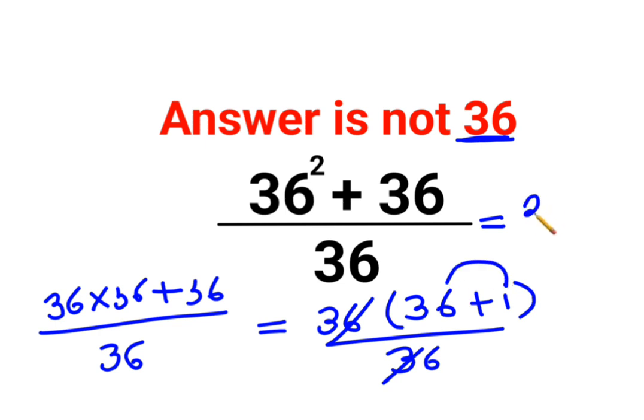That comes out to be 37. Okay, and not 36. So in these kind of sums, you need to realize that there are very silly, silly things which people make a mistake of.